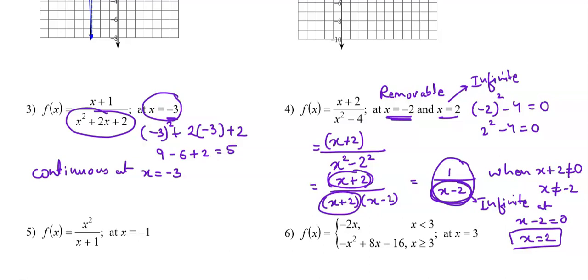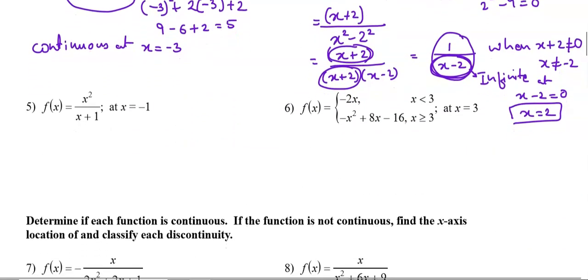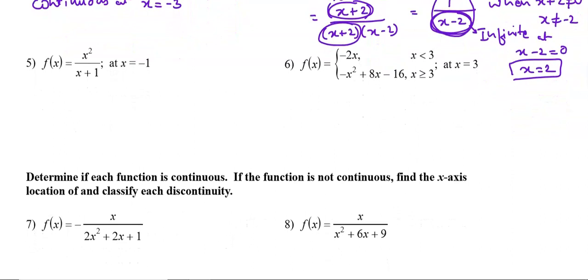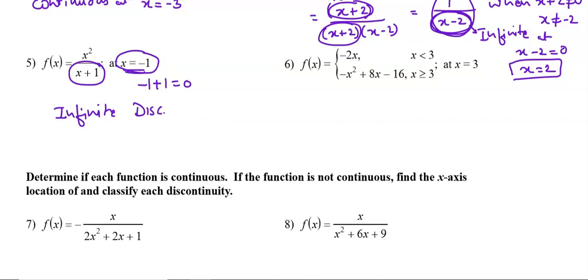Let's try question number 5. It is again a rational function with no common factor possible, so there is no removable discontinuity. When we put x = -1, we get -1 + 1 = 0, so the denominator becomes 0 at x = -1. Therefore it is an infinite discontinuity at x = -1.